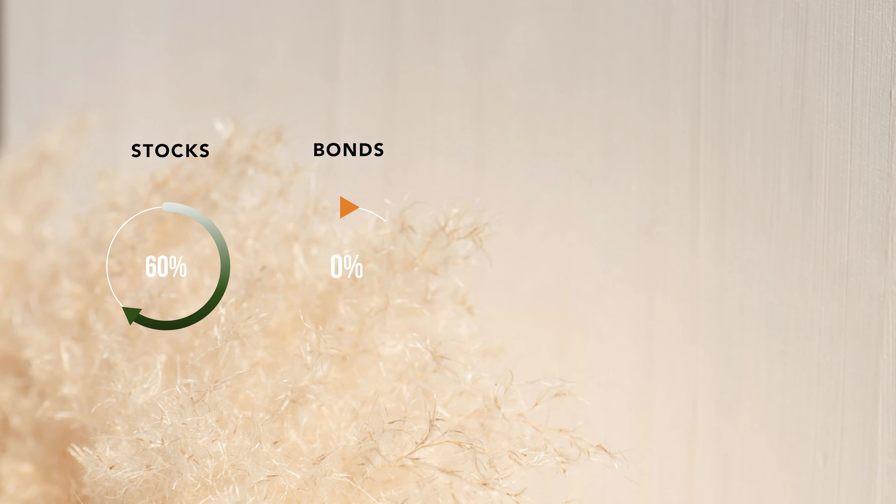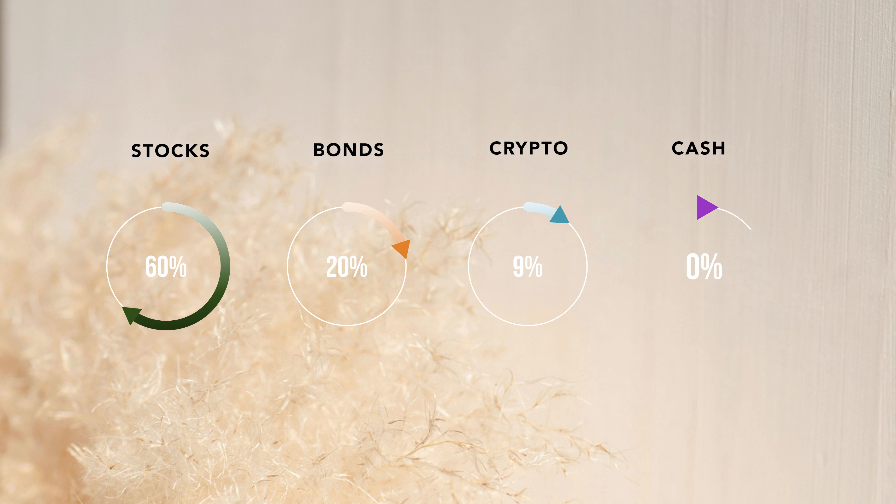What asset allocation does is risk management through diversification. By putting more than just one asset into your portfolio, you minimize the risk. Let's say you have an allocation of 60% stocks, 20% bonds, 10% crypto, and 10% cash. If crypto crashes down completely, it doesn't affect your whole portfolio because it's only 10%. And at least in theory, the different asset classes don't fluctuate simultaneously.